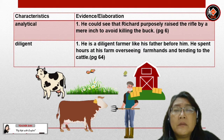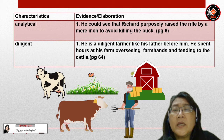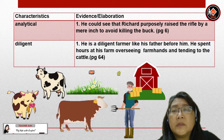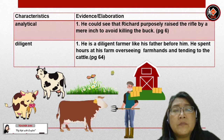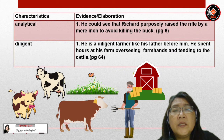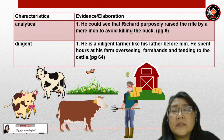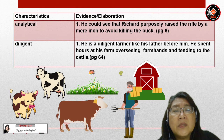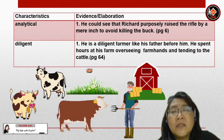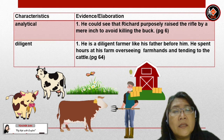In addition, Pa is also analytical. Evidence: he could see that Richard purposely raised the rifle by a mere inch to avoid killing the buck. He is also diligent — a diligent farmer like his father before him. He spent hours at his farm overseeing farmhands and tending to the cattle.